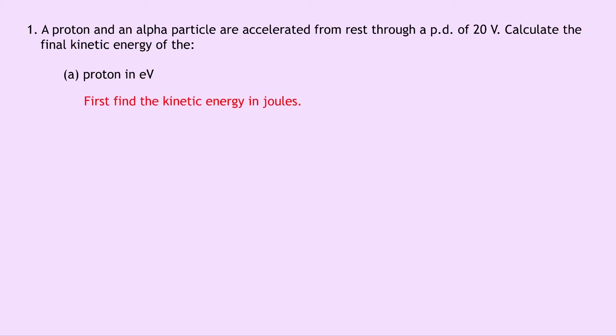First we need to find the kinetic energy in joules. So we're trying to find Ek final. We know that the charge in the proton is 1.6 times 10 to the minus 19 coulombs. Remember that's just the positive form of the electron charge, and the potential difference is 20 volts. So remember for charge moving parallel to an electric field, we can say that work done is equal to the change in kinetic energy.